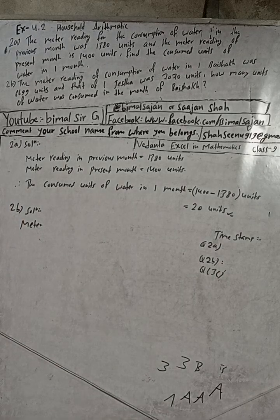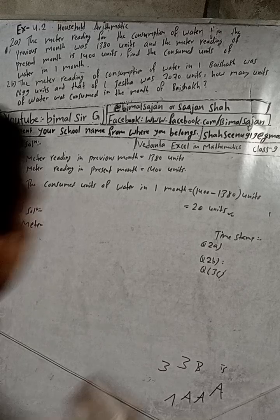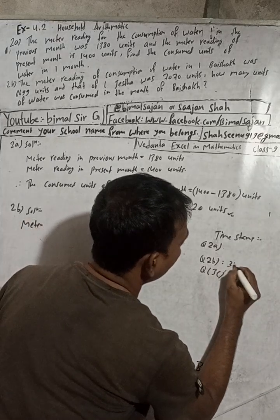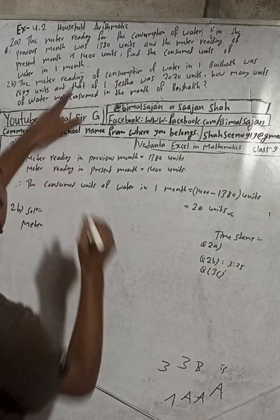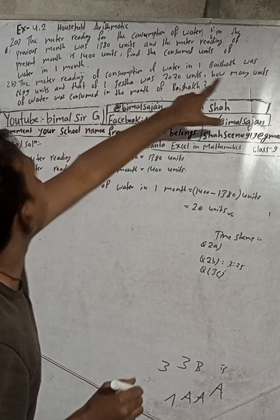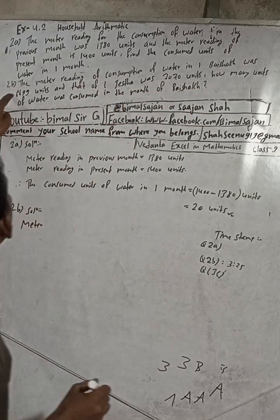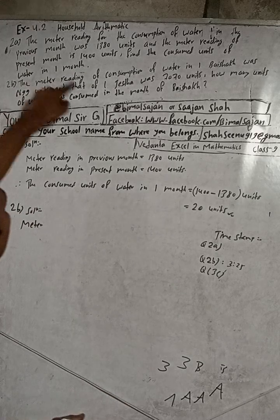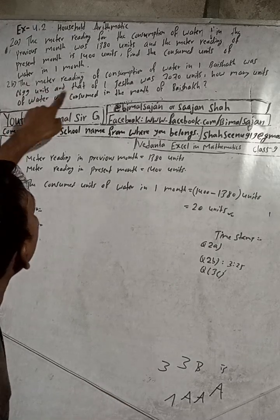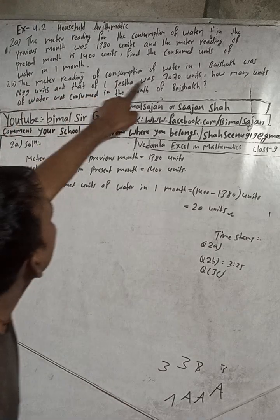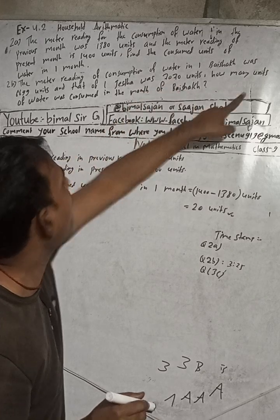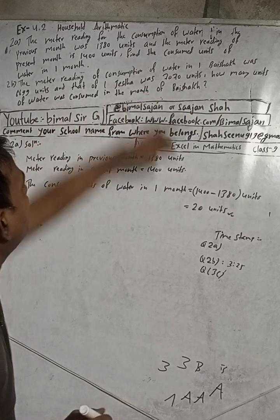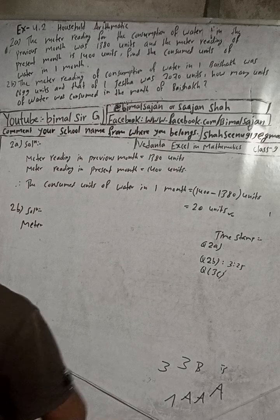The question is: the meter reading of consumption of water in Baisakh was 6699 units and that of first Jestha was 7070 units. How many units of water was consumed in the month of Jestha?